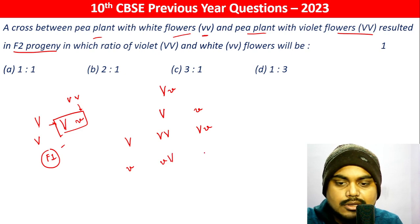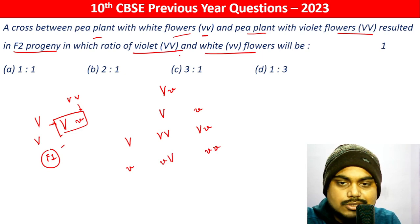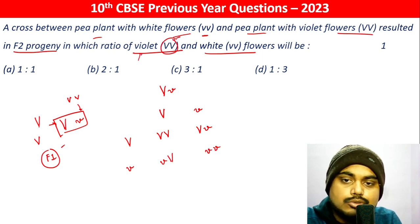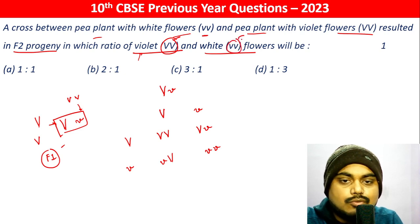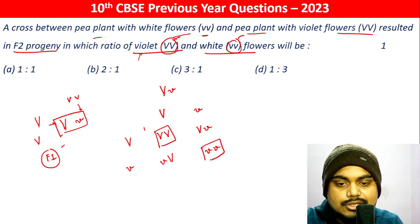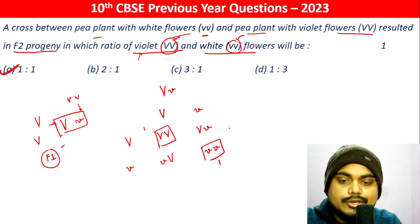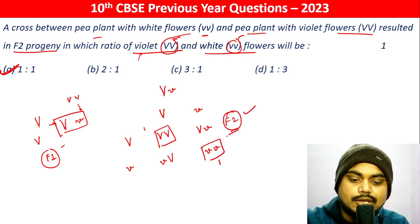Now, from the F1 progeny, we get F2 progeny. In what ratio are violet and white flowers? Here, violet refers to homozygous violet and homozygous white. This is one and this is one, so the answer will be 1:1. And this is the F2 progeny.